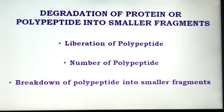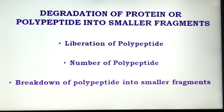The degradation of protein or polypeptide into smaller fragments depends on three steps: liberation of polypeptide, determination of number of polypeptides, and breakdown of polypeptide into smaller fragments. Liberation of polypeptide is achieved using urea or guanidine hydrochloride, which disturbs the non-covalent bonds in the protein and dissociates it into polypeptide chains. The number of polypeptides is determined using dansyl chloride. Breakdown of polypeptide into fragments is done by two methods: enzymatic method using trypsin, chymotrypsin, and pepsin; and chemical cleavage using cyanogen bromide to split the polypeptide into smaller fragments.